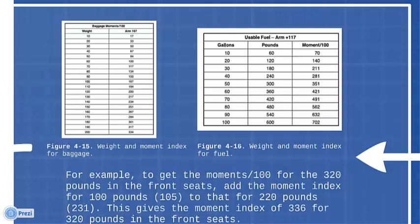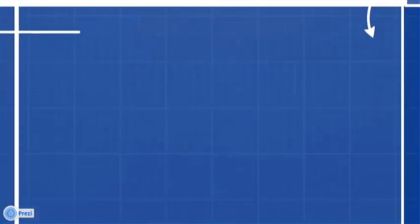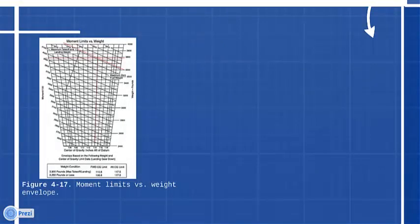This gives a moment index of 336 for 320 pounds in the front seats. Use the moment index versus weight envelope in Figure 4-17 on page 4-8 to determine if the weight and balance conditions will be within allowable limits for both takeoff and landing at the destination.